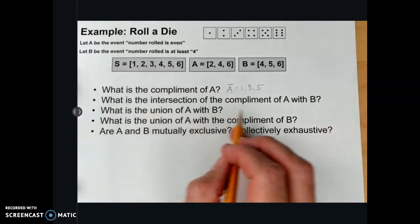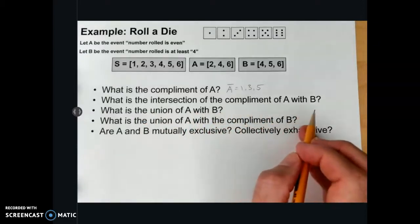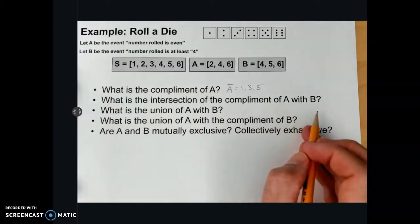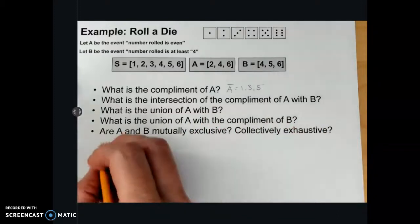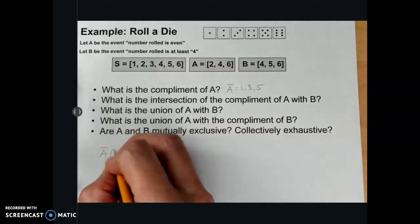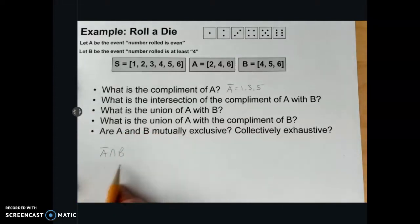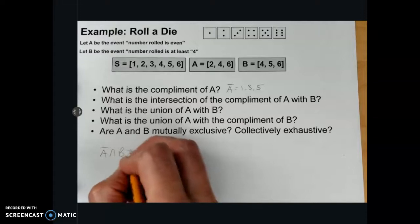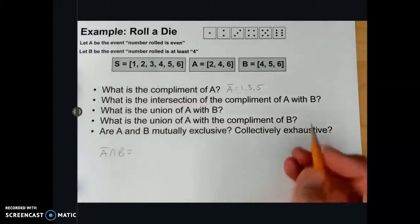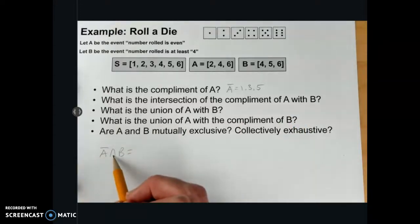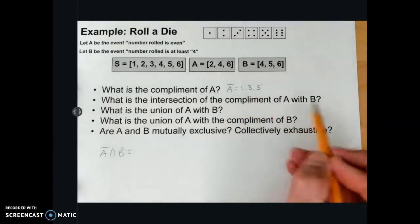What is the intersection of the complement of A with B? Well, the intersection is denoted like that. And that would be equal to, remember, intersection means and, so it's got to be in A complement and B.